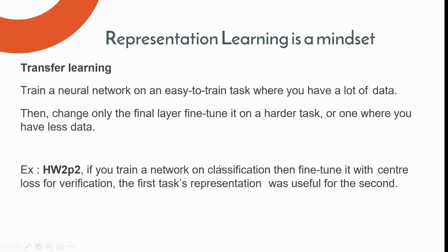For transfer learning: if you don't have enough data for your target task, you train your network on an easy-to-train task where you have enough data, then come back and fine-tune on the task you're really interested in. This is similar to what was done in Homework 2, Part 2 — the classification task and verification task.